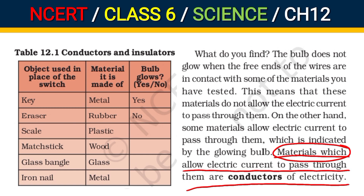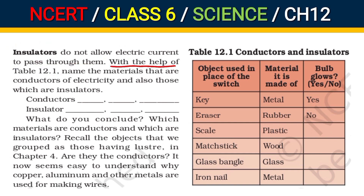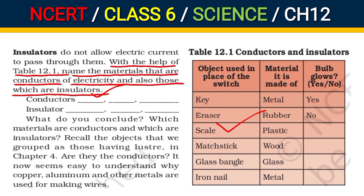Materials that allow electric current to pass through them are called conductors of electricity. Materials that do not allow electricity current to pass through them are called insulators. For example, rubber, plastic, wood, and glass are insulators — they do not allow the bulb to glow. With the help of table 12.1, we can name the materials that are conductors and those which are insulators.